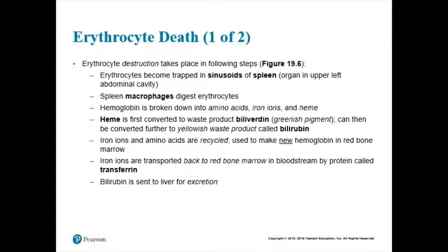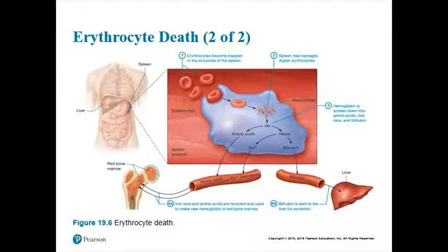When you break down a red blood cell and break down hemoglobin, almost everything gets recycled except for the heme — it gets turned into bilirubin, which you excrete. That's what happens when you go through the life of a red blood cell: it gets trapped in the spleen, eaten by a white blood cell, and broken into parts. Parts get recycled and parts get excreted. Now you know the life of a red blood cell — what it looks like, what it does, how to make it, how to control it, and how to get rid of it.